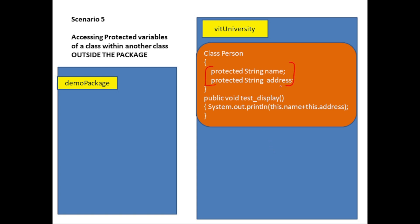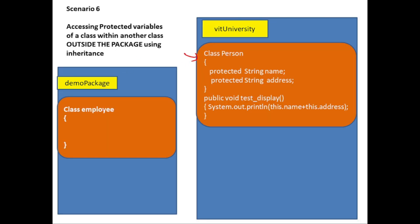Scenario five: two different packages — a DemoClass in another package trying to access Person's protected data members, but with no inheritance relationship — the answer is no. Scenario six: two different packages, Employee extends Person. Now can Employee access the protected data members of Person? Yes, it can — because it's all about inheritance. Though these two classes are in two different packages, since there is an inheritance relationship, the child class can access the protected data members of the parent class.